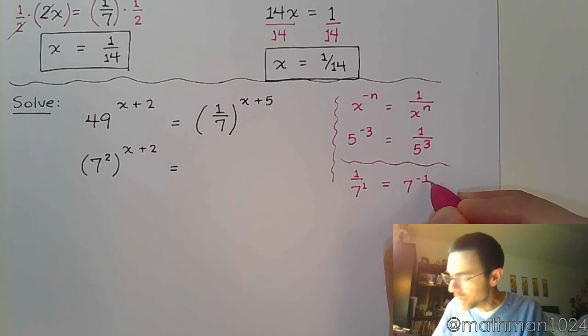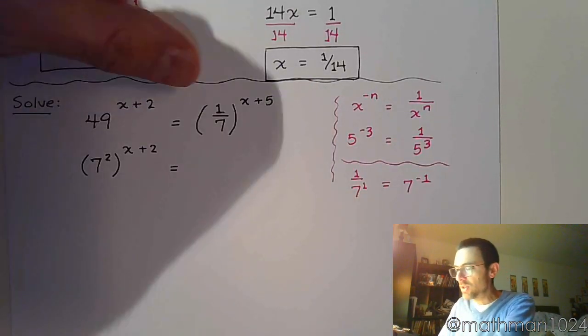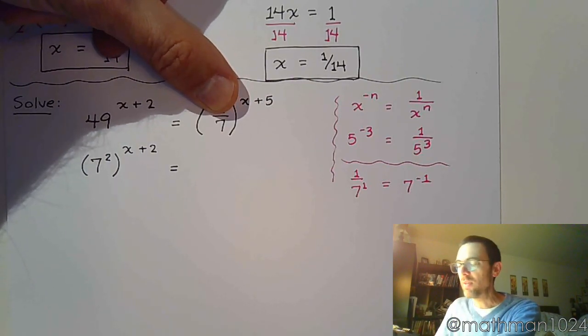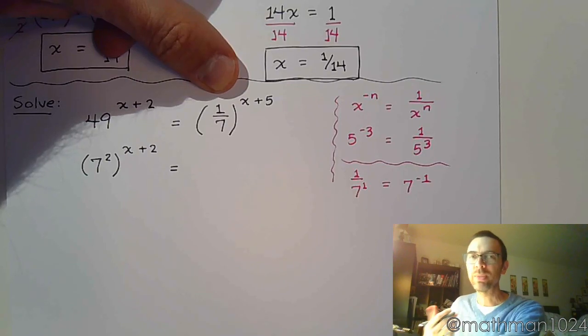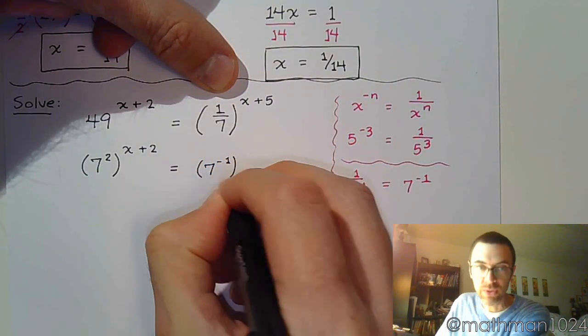So this is a trick we're going to be employing quite a bit when we solve these equations. So if I just had 7, you would say that's 7 to the 1st. But since it's in the denominator, we know that's going to be 7 to the negative 1st, like that.